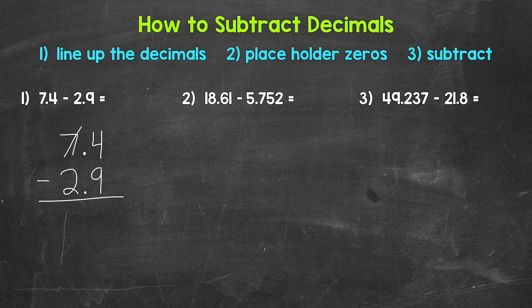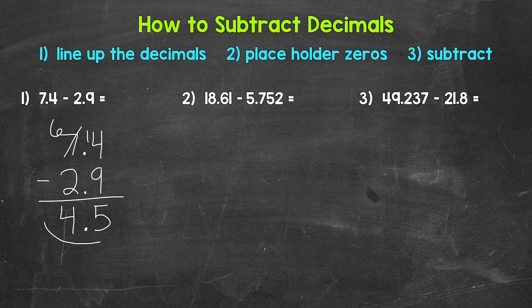So we borrow from the seven — this is now six — and we end up with 14 minus nine, which gives us five. Then we bring the decimal straight down into the answer; the decimal is going to be lined up throughout the entire problem. Then we move over to the ones place where we have six minus two, which gives us four. Our final answer is four and five tenths. So seven and four tenths minus two and nine tenths equals four and five tenths.